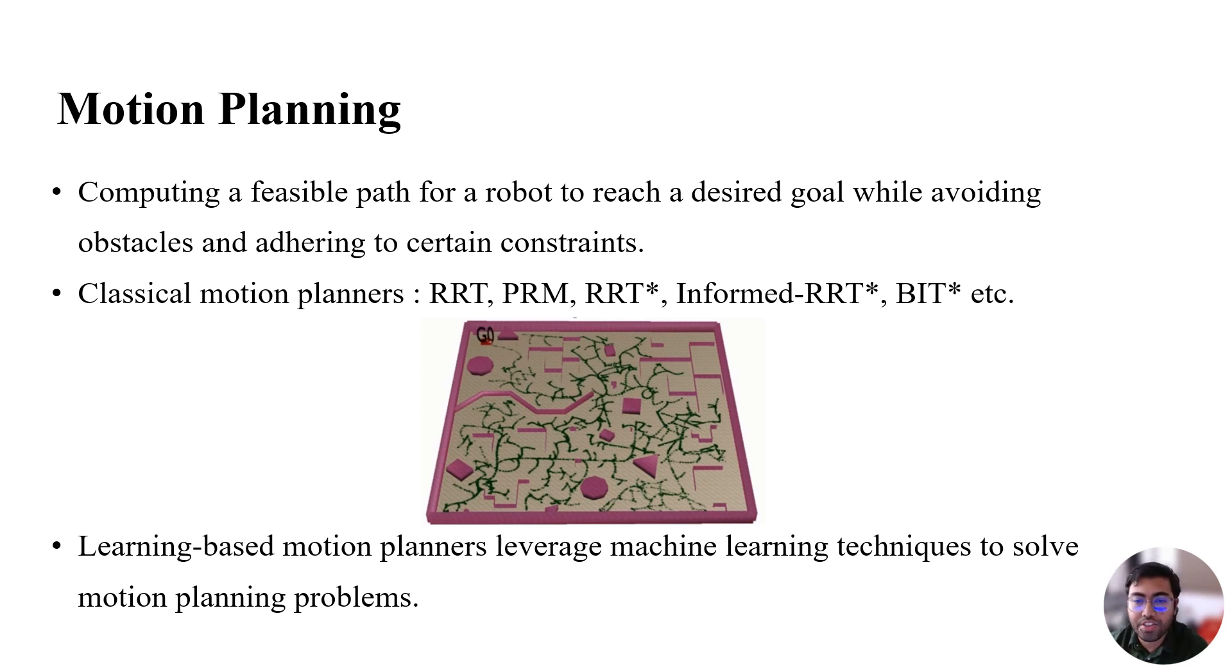Learning-based motion planners, on the other hand, merge machine learning algorithms with traditional motion planning techniques to enable robots and other autonomous agents to plan their movement in complex environments.